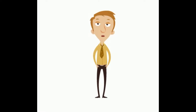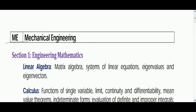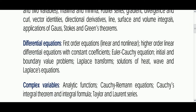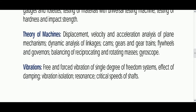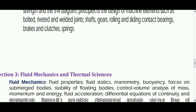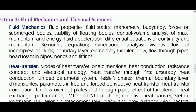Let us see how the syllabus is divided according to number of hours for preparation. As I have covered in my previous video on GATE Mechanical Engineering weightage, I divided the paper into five sections: Aptitude and English, Mathematics, Design subjects, Thermal subjects, and Production subjects.